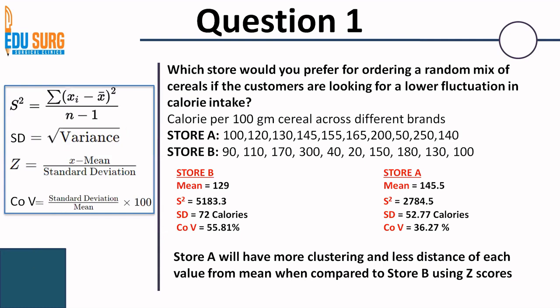Using our previous example, if you calculate the Z score for each value in store A and store B — values like 100, 120, 130, 145, 90, 110, 170, 300 — you will see that there are smaller Z scores for store A versus higher Z scores for store B. What that means is that there is more clustering and less distance in store A compared to store B. So even using Z scores, you can identify if data has fluctuation.